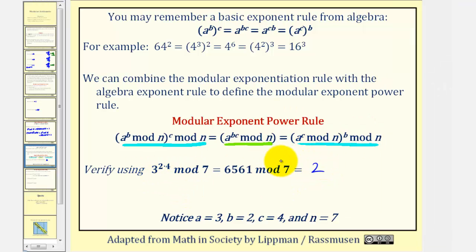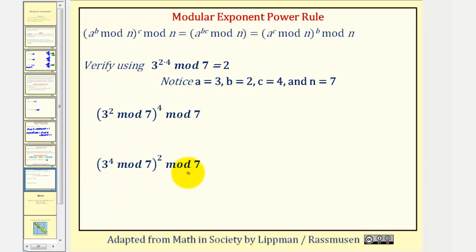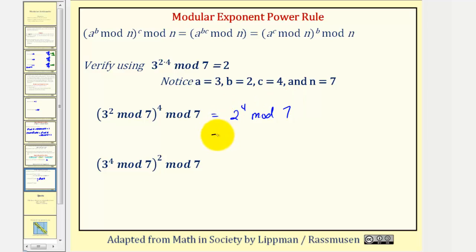In this example, a is three, b is two, c is four, and n is seven. We should also get two using the first alternate form. Three to the second is nine; nine mod seven gives two. So this equals two to the fourth mod seven. Two to the fourth is 16. 16 mod seven equals two, since there are two sevens in 16 — two times seven is 14, and 16 minus 14 is two.